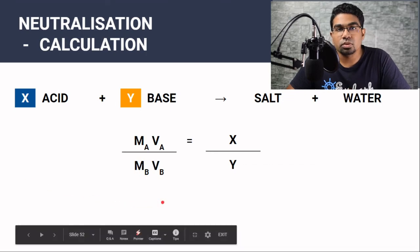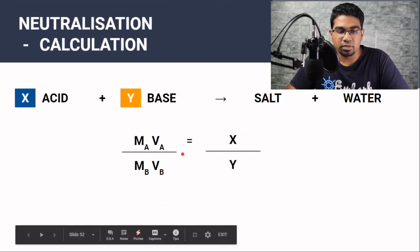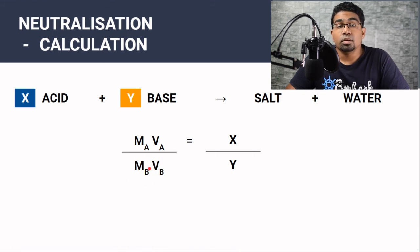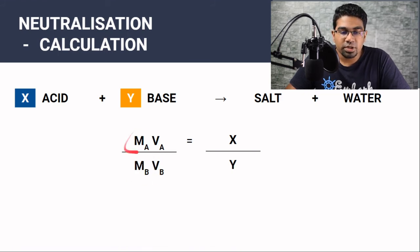Now this formula can be used to calculate many different things. Here we have found the concentration of the alkali. Because we already have the concentration of acid, the volume of acid and the volume of the base. And of course all this is based on the mole ratio of acid to base. So first we need the mole ratio.